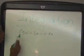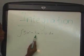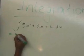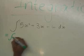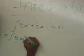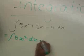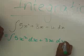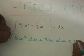The question asks you to integrate 5x squared plus 3x plus 4 dx. You write equal, integrate 5x squared dx plus 3x dx plus 4 dx.